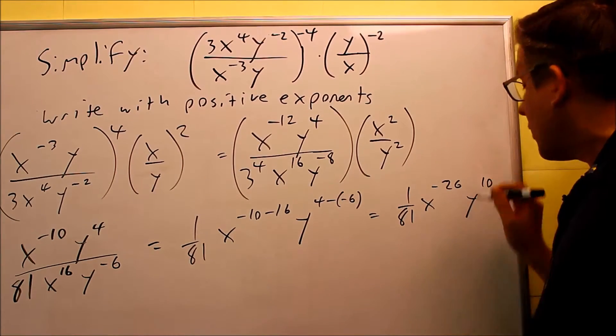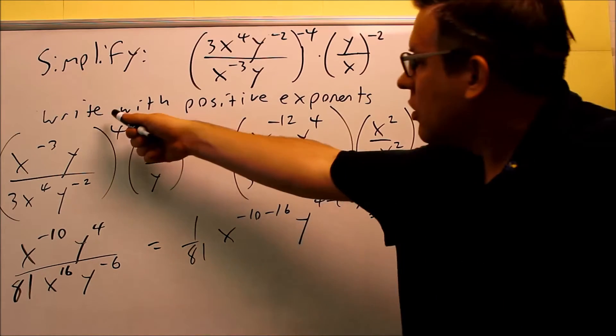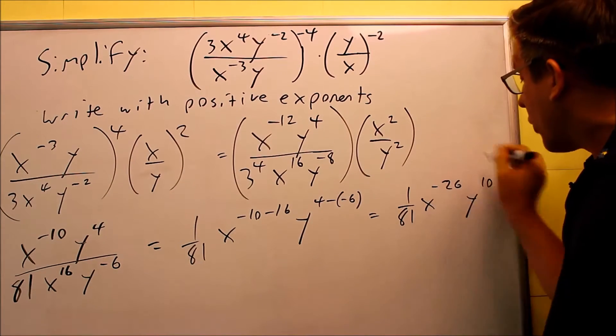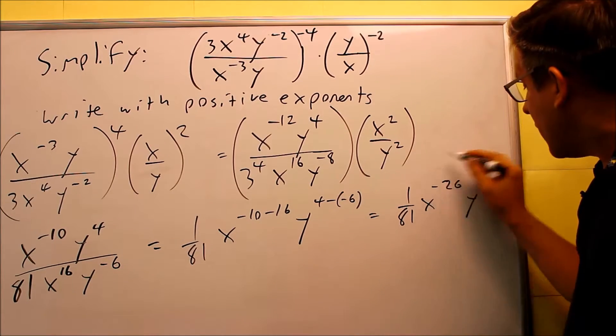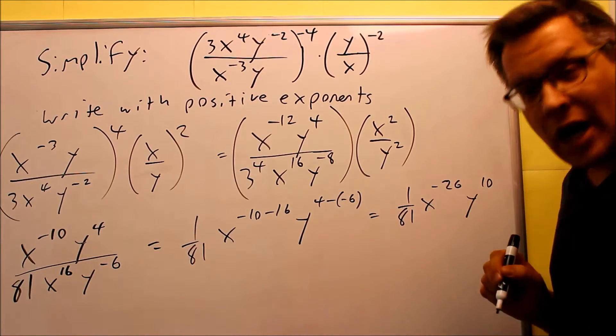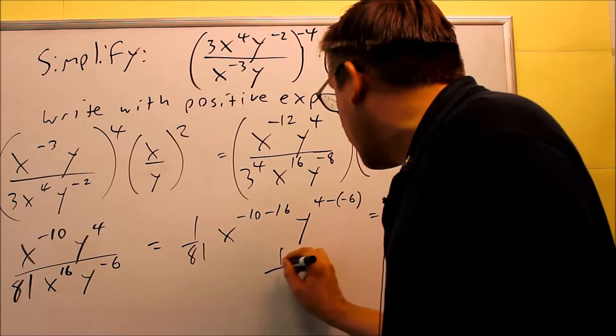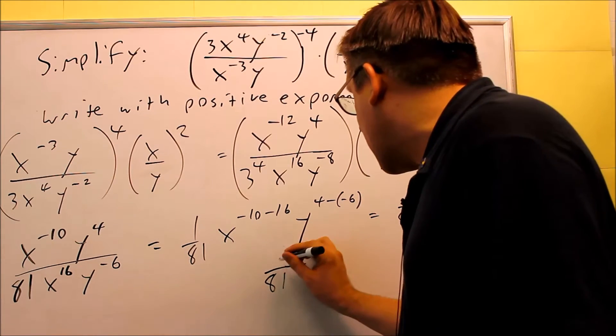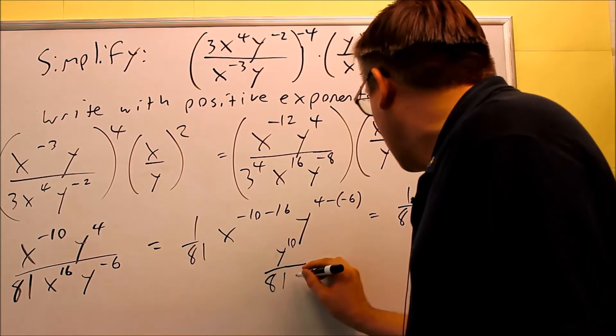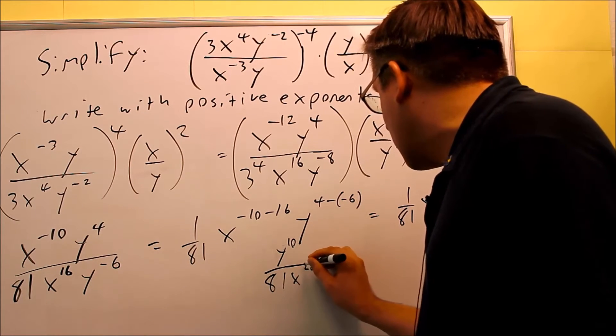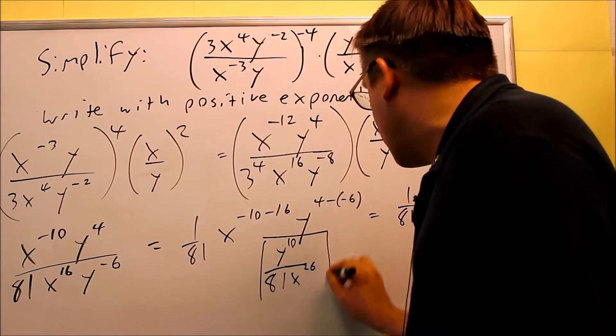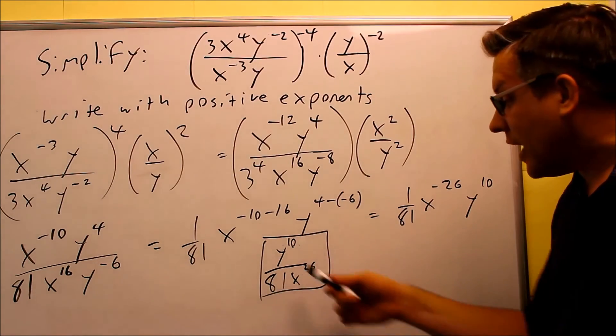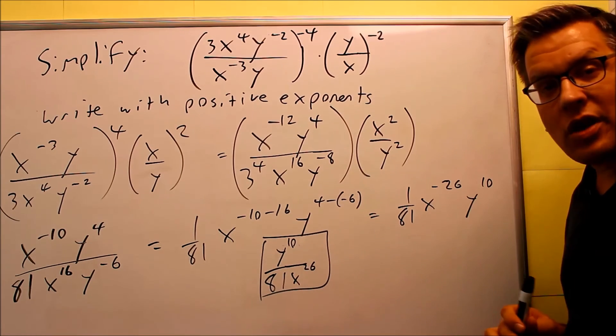However, it says write with positive exponents. So I need to rewrite this, and so we'll use our negative rule that says if you have a negative, you can move that down to the bottom. And then you'll get 1 over 81 is on the bottom there. The y to the tenth is going to go on top, so I can put that there. And I have x to the twenty-sixth on the bottom. So this right here, that would end up being your final answer, y to the tenth on top, and then 81 x to the twenty-sixth. All that has positive exponents.